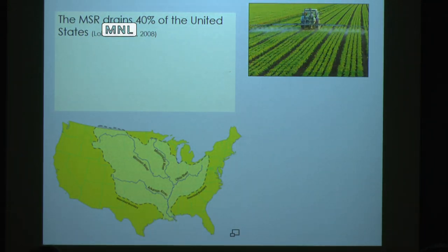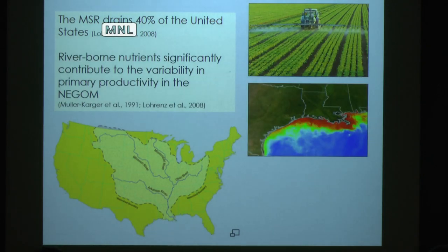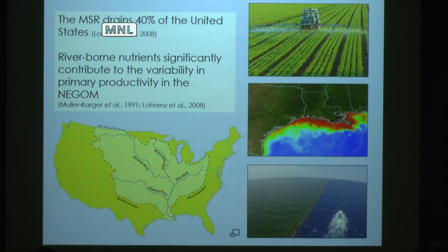The Mississippi River watershed drains over 40% of the United States, including one-third of all the corn grown in the entire world, much of which is heavily treated with fertilizers. This unused fertilizer becomes nutrients, and when it's brought to the Gulf it can sustain high bloom events of phytoplankton, seen in red in the satellite image. The properties of this water are strikingly different from the oligotrophic gulf.